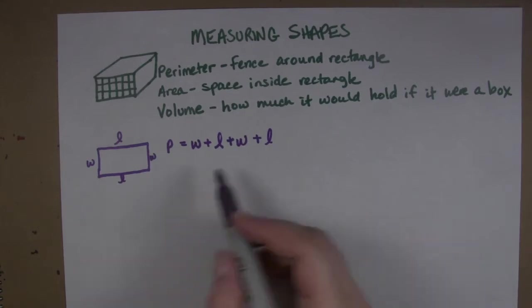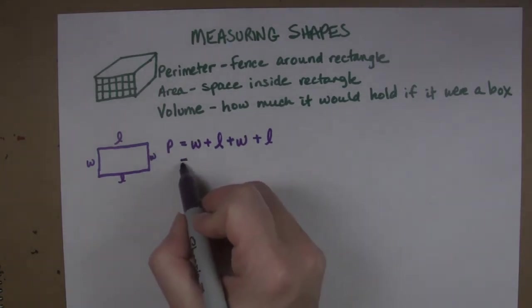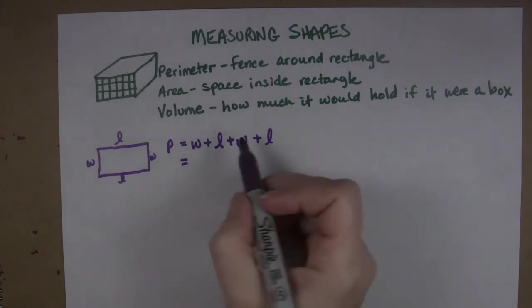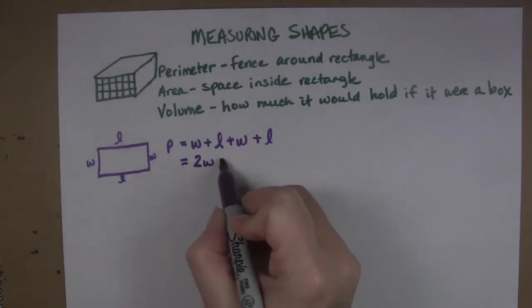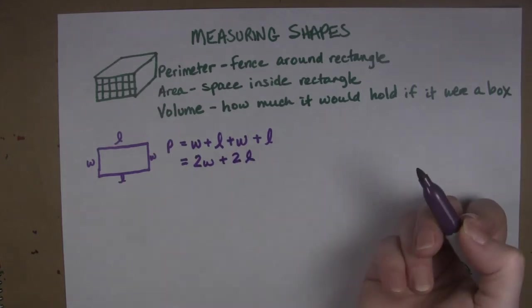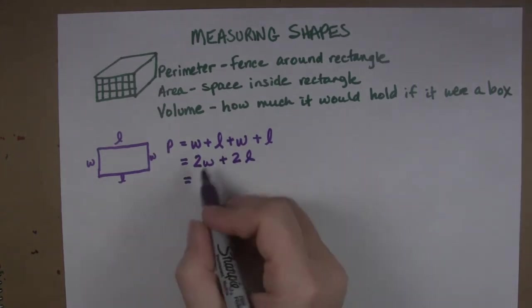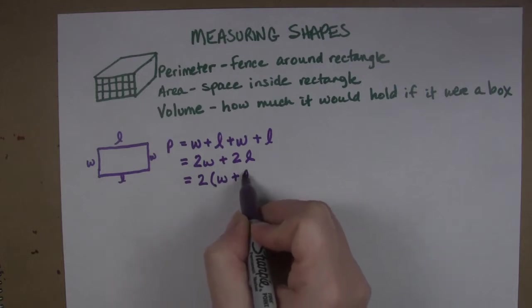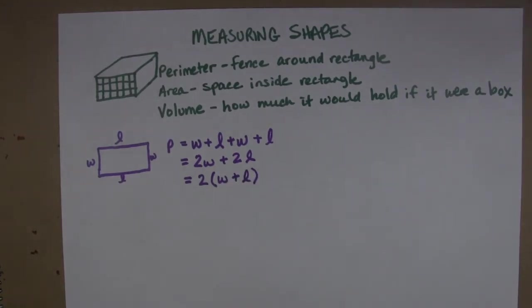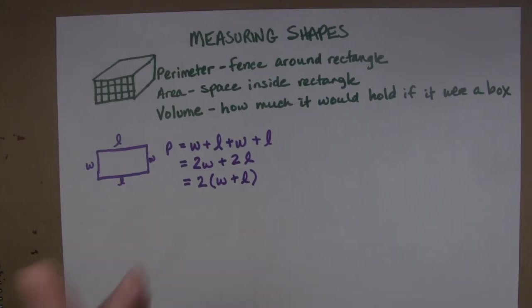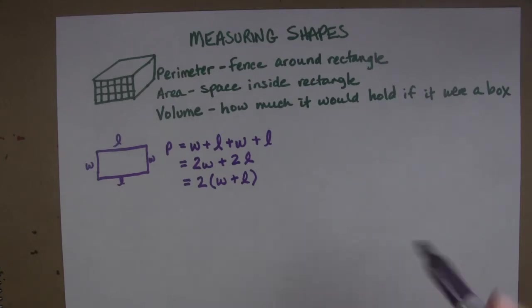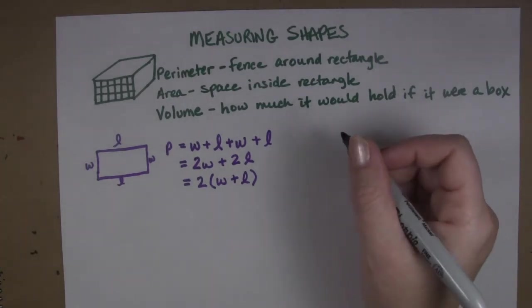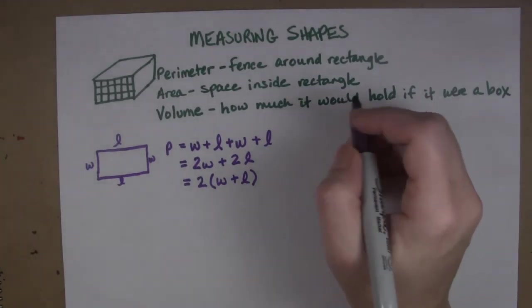Now you can rewrite this in different ways depending on what floats your boat at the moment. So we could rewrite this as P equals 2W plus 2L or we could rewrite it as 2 times W plus L. Those all mean the same things. We've just manipulated the formula using algebra. So those are all the same. I don't care which one you use whichever one comes easiest to you or seems more appropriate at the moment.